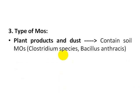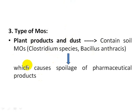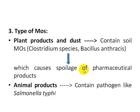The next parameter is the type of microorganism. The type of microorganism present in a pharmaceutical product depends upon the source of the raw materials or ingredients. For example, if the source is plant products and dust, there is more possibility of soil microorganisms such as Clostridium species or Bacillus anthracis being present. Likewise, animal products may contain pathogens like Salmonella typhi. So the preservative must be selected based on the likely microorganisms from the source material.